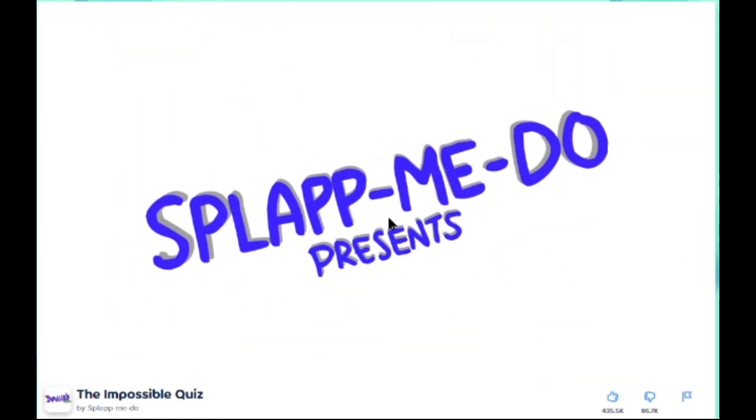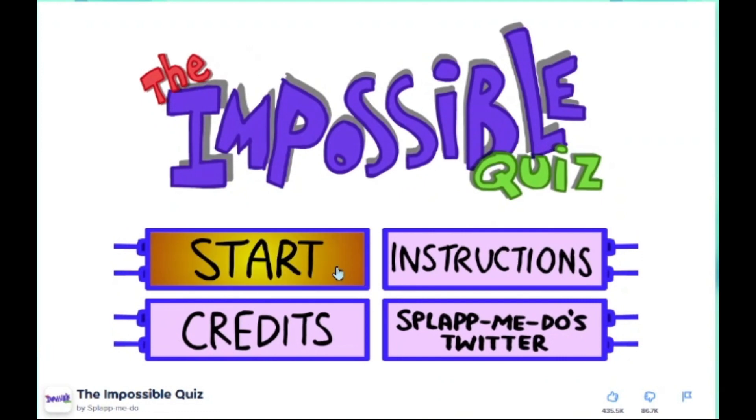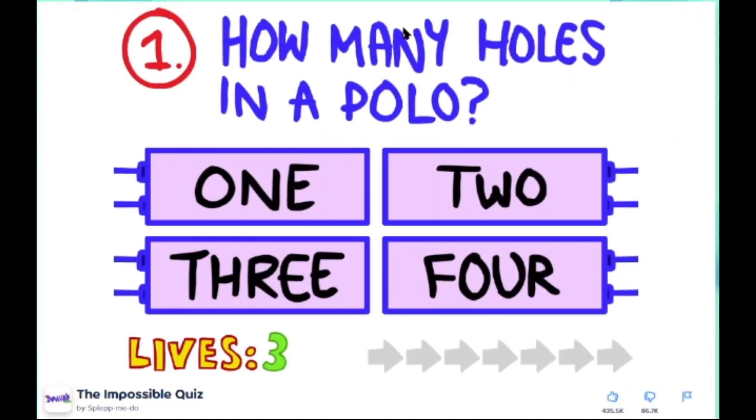Okay, that was a pretty good fart sound effect. Let's just start. How many holes in the polo? Let's see. So there's the bottom one, the arm one, and the head one. So I guess that's four.